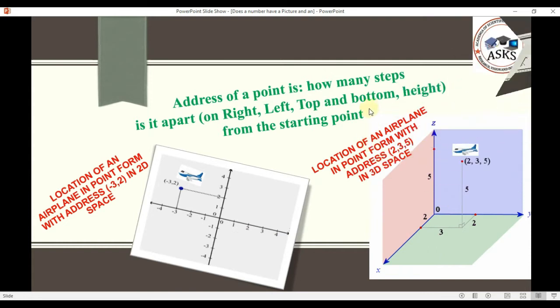Now, address of a point is how many steps is it on the right, on the left, on top, on bottom, or on the height. This is our height. From a starting point, this is our starting point here, and this is our starting point here. The starting point is known as origin. Here, we are going to share one example with you.